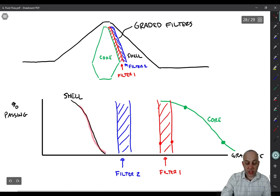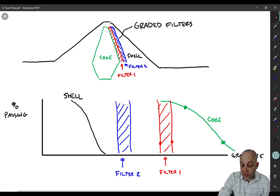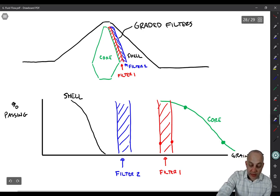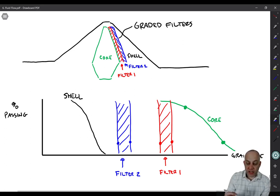Filter one is now going to migrate into the shell because the D85 size of the shell is too big relative to the D15 size of filter one. So what we'll do now is design a secondary filter where we have these two more goal posts here based on the D15 and D85 size of filter one. And then we will have a second filter that goes through there. And now this filter is good enough relative to the shell. It will filter it.